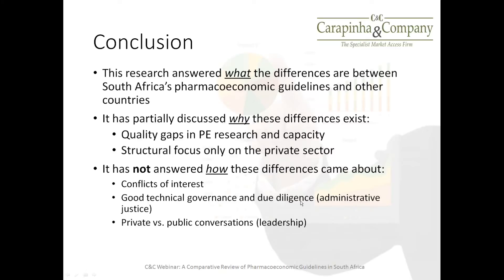Another area is good technical governance and due diligence. It appears that in the drafting of the pharmacoeconomic guidelines, two major sources were used: the Irish and the Australian pharmacoeconomic guidelines. It doesn't appear that there was a robust international review of how pharmacoeconomic guidelines are structured around the world, to then use best practice and implement it within the South African environment. My personal view is that the pricing committee failed in its responsibility to follow due diligence — of international review and good technical governance to ensure that it's consultative, that we understand who the drafters are and how potential conflicts of interest have been managed.